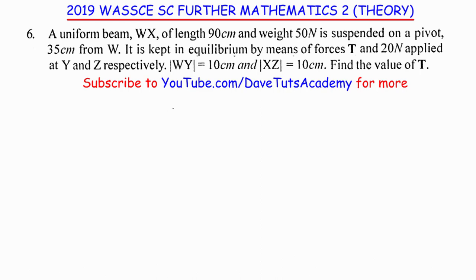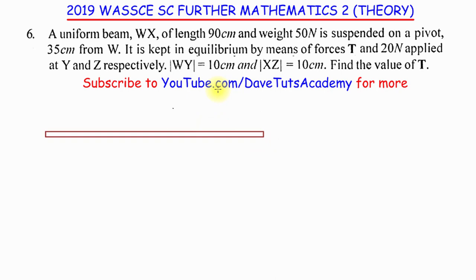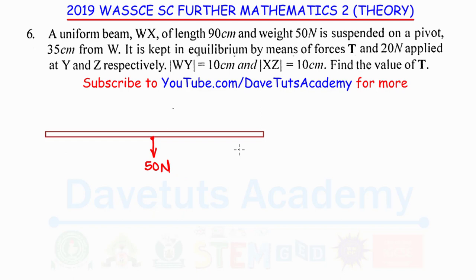To solve this question, we can draw the particular beam described. The fact that it is uniform means the weight will be evenly distributed, so the weight of 50 N will act at the middle of the beam. The length is 90 cm, so the midpoint will be at 45 cm.